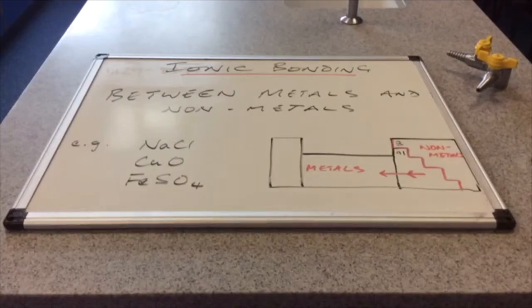In this video I'm going to take a look at ionic bonding. So ionic bonding is the way metals and non-metals actually combine with each other.